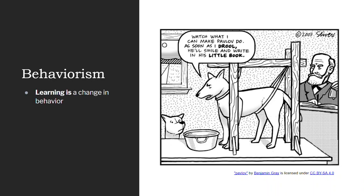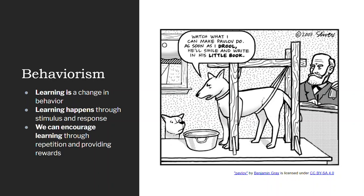Behaviorism defines learning as a change in behavior. The dog has learned when he changes his behavior to drooling when he hears the bell. Learning happens through the stimulus and response process. We can encourage learning by repetition and providing rewards. Since learning is all about changing behavior, it happens very easily as we repeat something and reinforce something. It's a little more complex than that, but that's the basic idea.